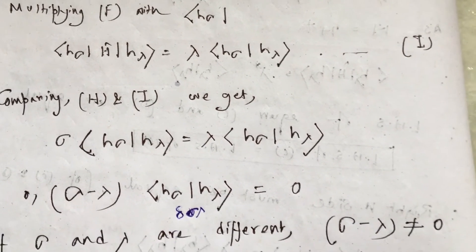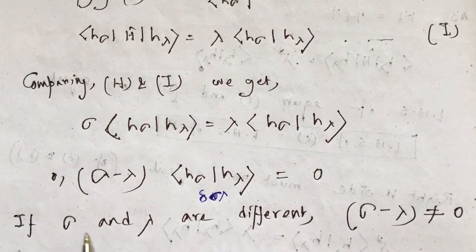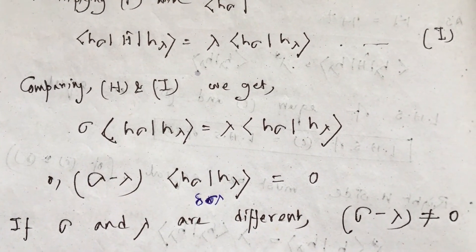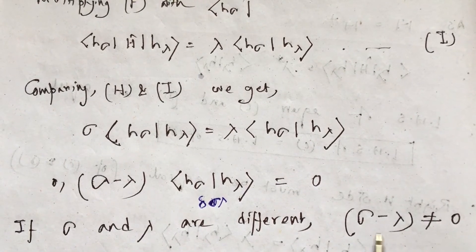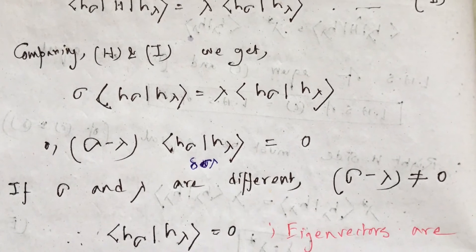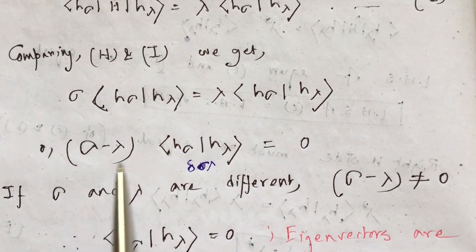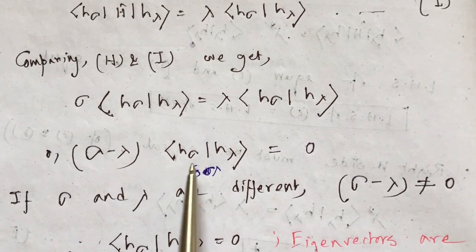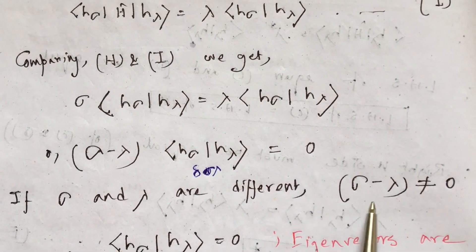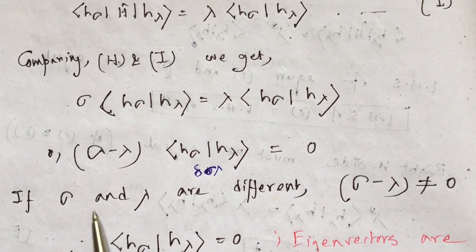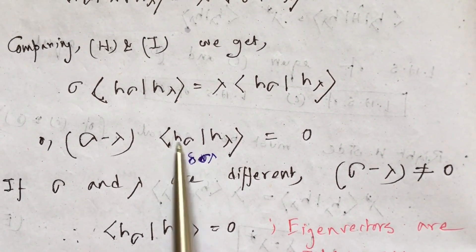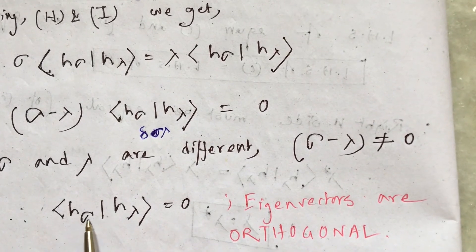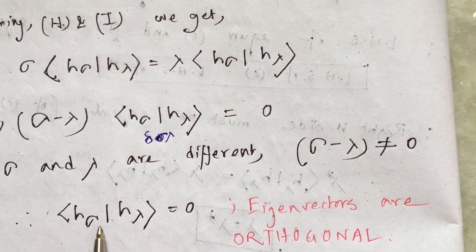Since σ and λ are different eigenvalues, σ − λ is not equal to zero. Therefore the scalar product ⟨H_σ|H_λ⟩ must equal zero. When the scalar product of two eigenvectors is zero, they are orthogonal — just as in Euclidean space where î·ĵ = 0 while î·î = 1.